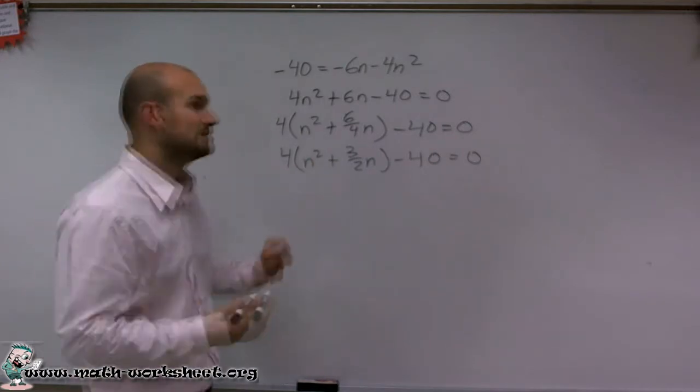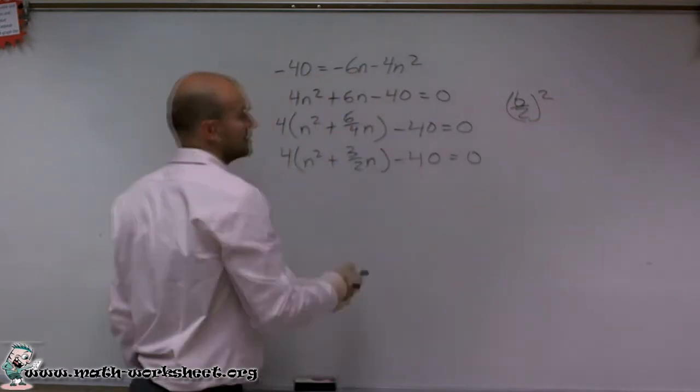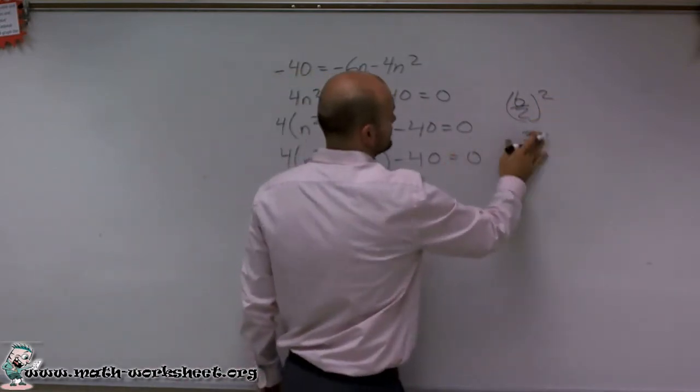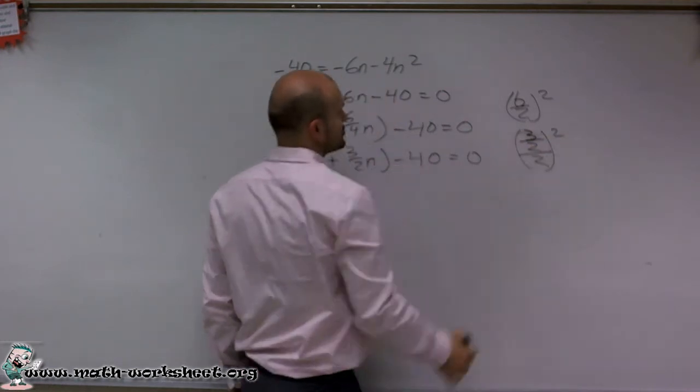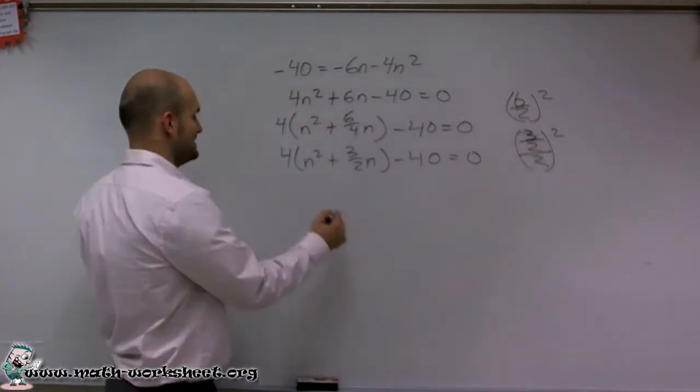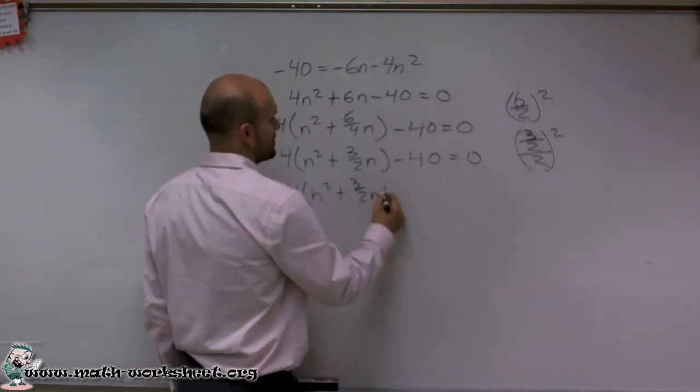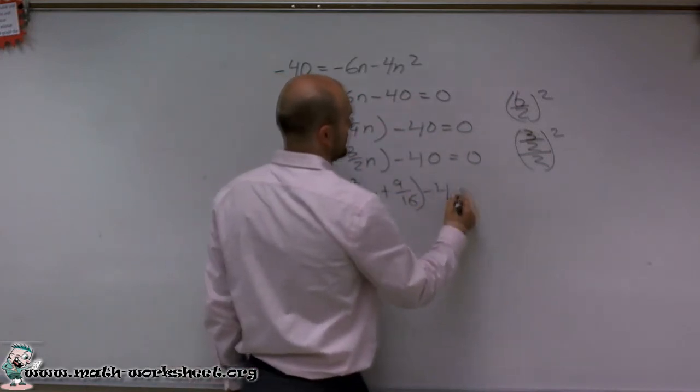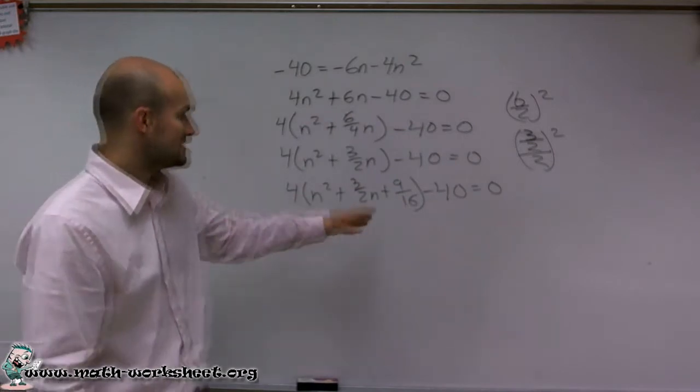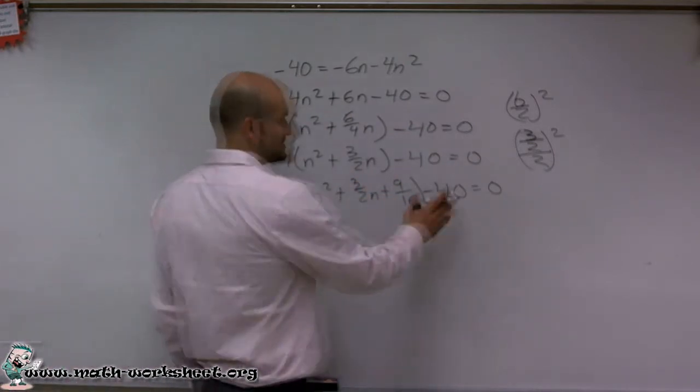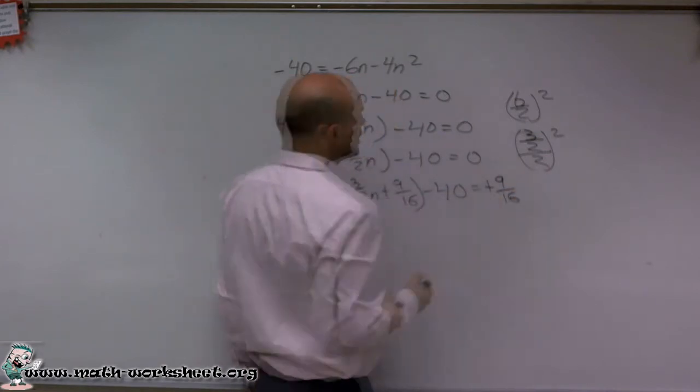So now I need to complete the square by taking b divided by 2 and squaring it. So b, which is 3 halves divided by 2 squared, which is going to be 9 sixteenths. So I have 4 times n squared plus 3 halves n plus 9 sixteenths minus 40 equals 0. Now remember, since I'm adding a 9 sixteenths over here on the other side of my equal sign.